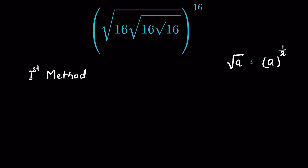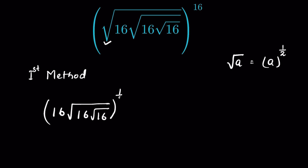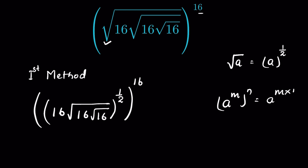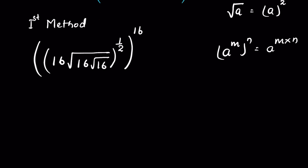So this first square root means 16 times √16 times √16, all under a square root. If we remove the square root and instead write it as raised to the power of 1/2, then using the identity (a^m)^n = a^(m×n), this simplifies further.